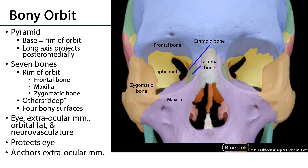The way that I conceptualize the bony orbit is a pyramid — a four-sided pyramid. The rim of the orbit consists of three bones: superiorly there's the frontal bone, laterally there's the zygoma or zygomatic bone, and inferomedially we have the maxilla. The four sides of the pyramid converge from that rim towards an apex which is posterior medial.